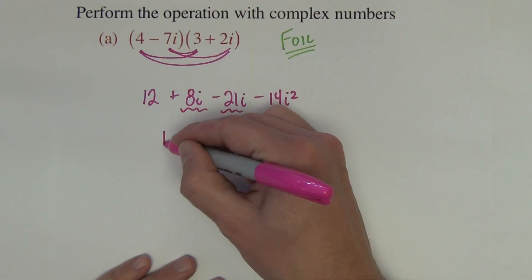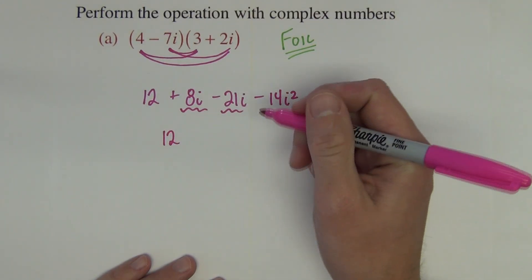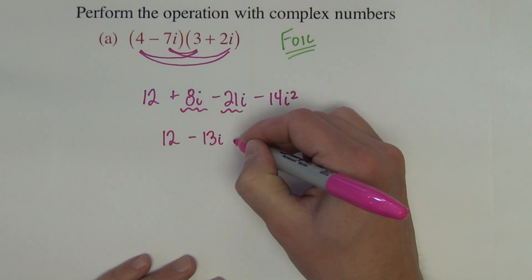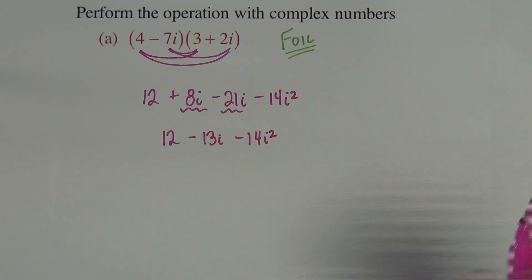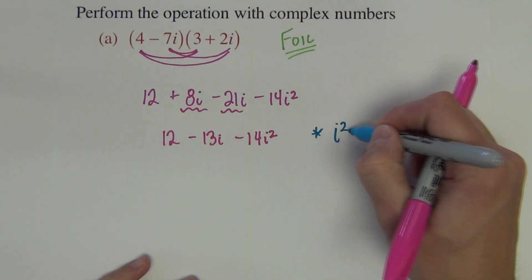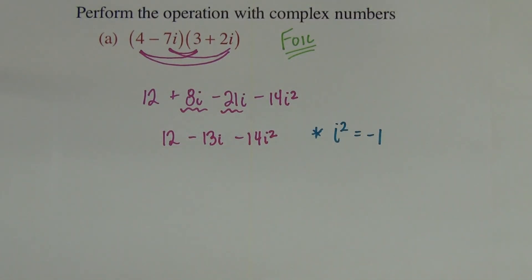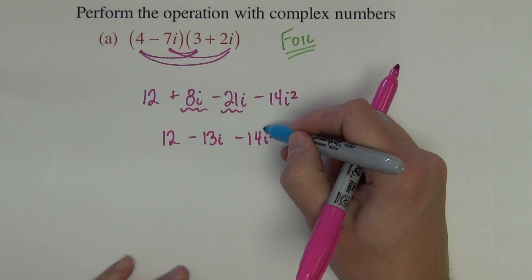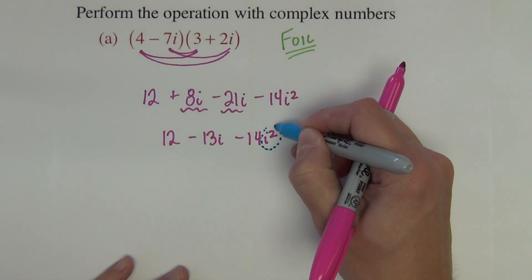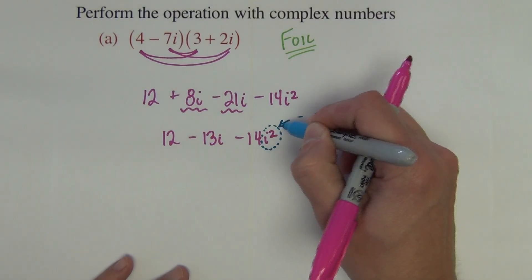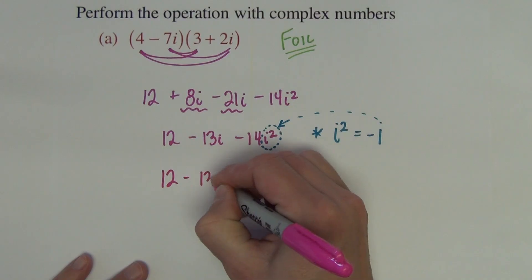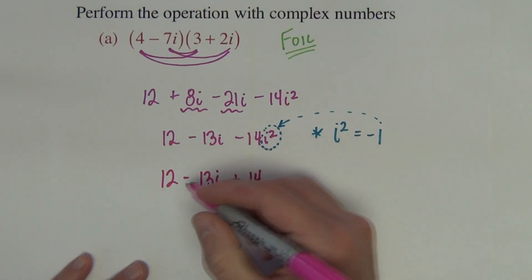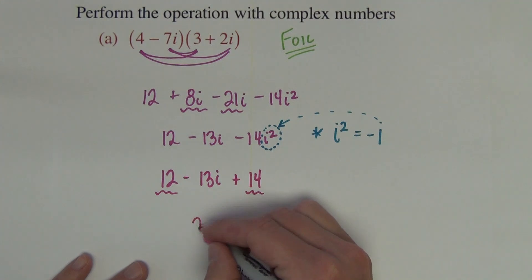If we get these like terms, we get 12 minus 13i minus 14i squared. Now for these complex numbers, we all have to remember that i squared is equal to negative 1. So we replace this i squared with a negative 1. So it becomes 12 minus 13i plus 14. And now the 12 and the 14 are like terms. We end up with 26 minus 13i.